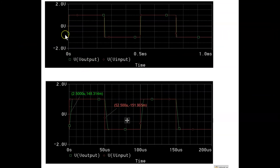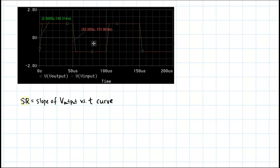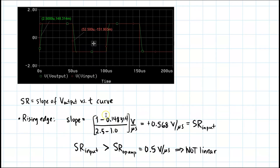Comparing the two slew rates: at 2 kHz the output follows very well, but at 10 kHz it does not. Calculating the slew rate as the slope of V-output versus time on the rising edge gives 0.568 volts per microsecond. This input slew rate exceeds the op amp's limit of 0.5 volts per microsecond, so the op amp stops following linearly. Repeat the same process for the falling edge, then change frequency to 100 kHz and observe.